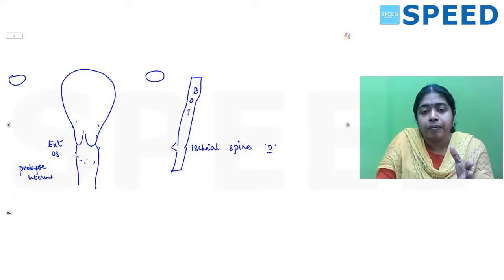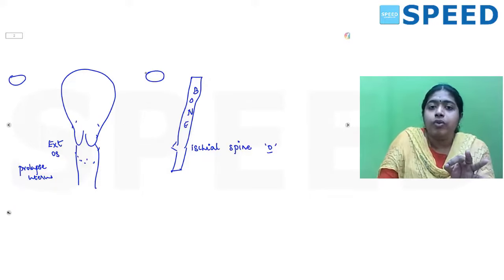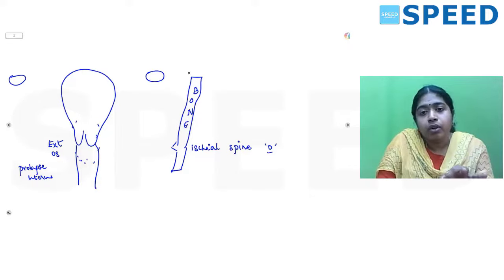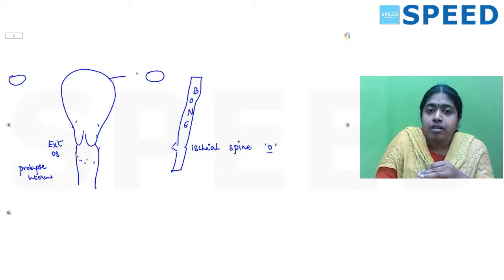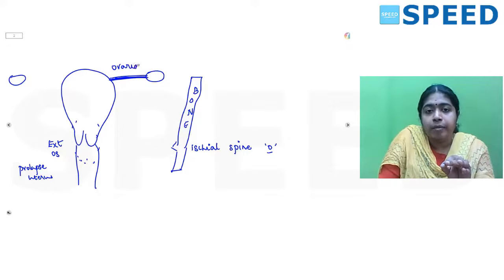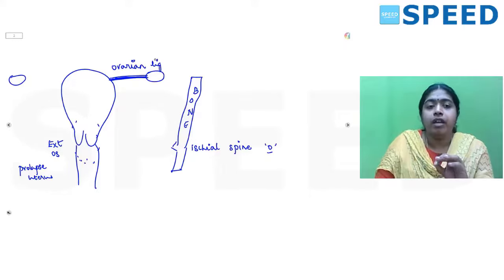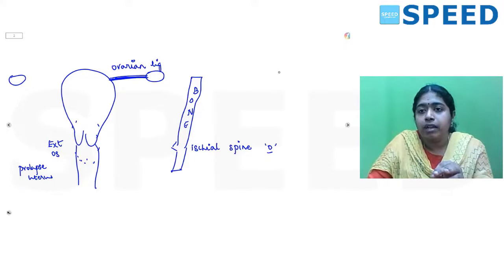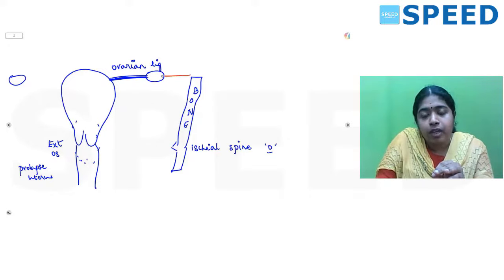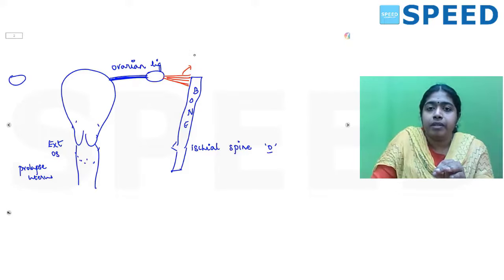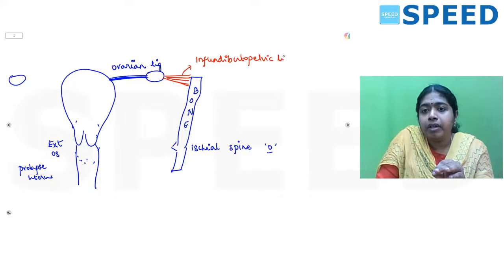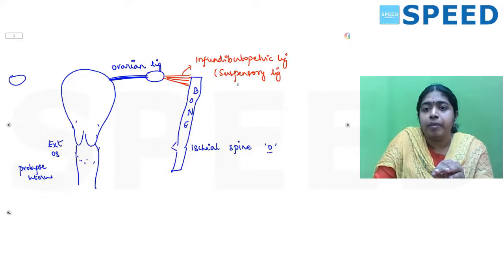The ovary is attached on one end to the uterine cornu and on the other end to the bone, as it cannot hang freely inside the pelvis. It is attached to the uterus by the ovarian ligament. The other side of the ovary is attached to the lateral pelvic wall by the infundibulopelvic ligament, also called the suspensory ligament of the ovary.